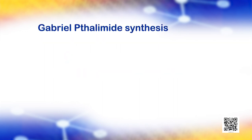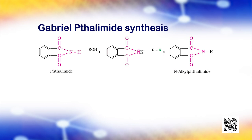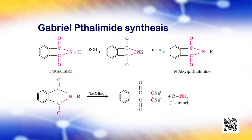Gabriel synthesis is used for the preparation of primary amines. Phthalimide on treatment with ethanolic potassium hydroxide forms potassium salt of phthalimide, which on heating with alkyl halide followed by alkaline hydrolysis produces the corresponding primary amine. Aromatic primary amines cannot be prepared by this method because aryl halides do not undergo nucleophilic substitution with the anion formed by phthalimide.